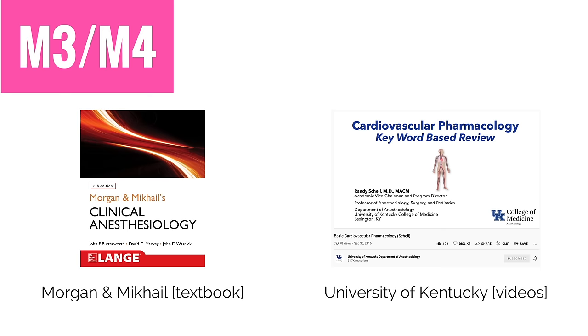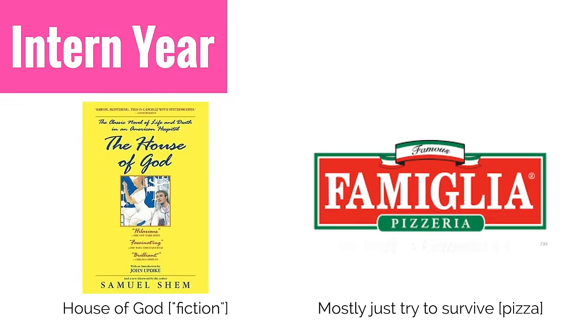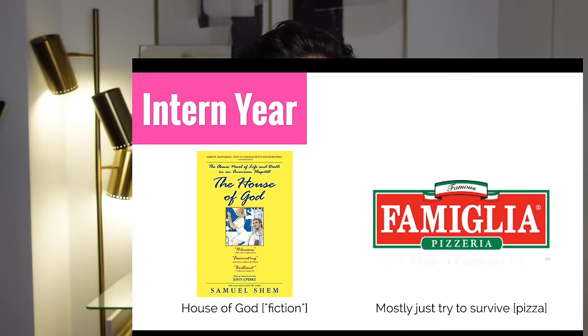For your intern year, it's absolutely crucial that you have read cover to cover Yao and Artuzio, Big Miller, Baby Miller, Morgan and McHale, Stolting — no, I'm just kidding. Obviously you pretty much don't have to read anything during your intern year because your primary goal is to just survive. And if you're going to read anything at all, maybe read some fiction so you can have some entertainment in your life. I personally have read House of God several times — it's a dark satire but it's pretty entertaining. I also did spend a lot of time eating pizza.